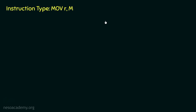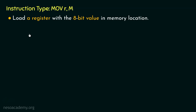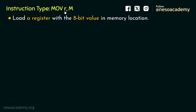Now coming to the instruction type MOV R,M — the mnemonic MOV stands for move. This instruction means the microprocessor is supposed to load a register with the 8-bit value in the memory location. That is, there is some 8-bit value in a memory location, and a specific register specified by R is to be loaded with that 8-bit value from the memory location.